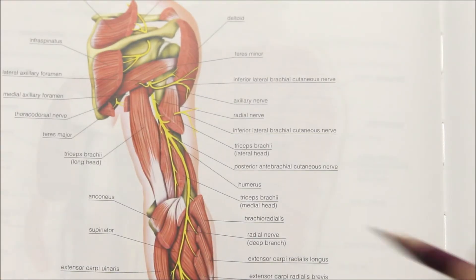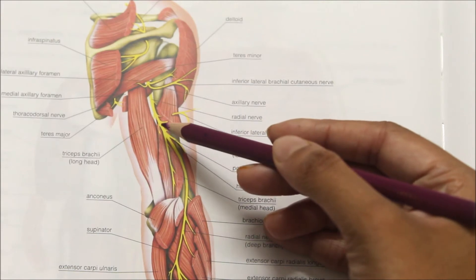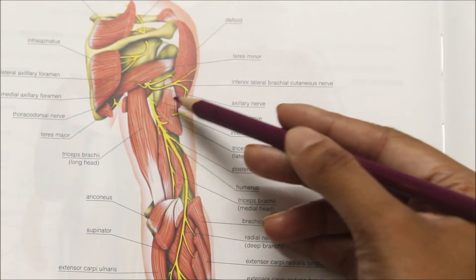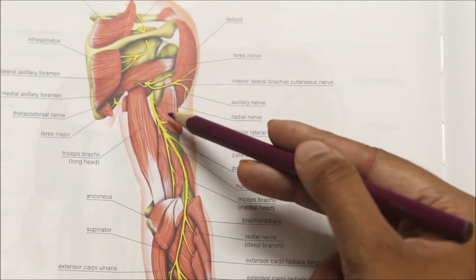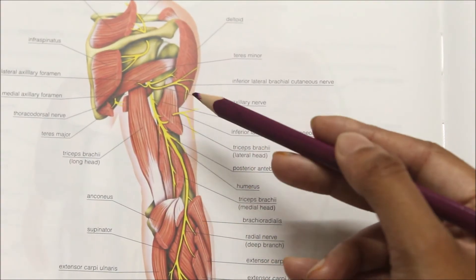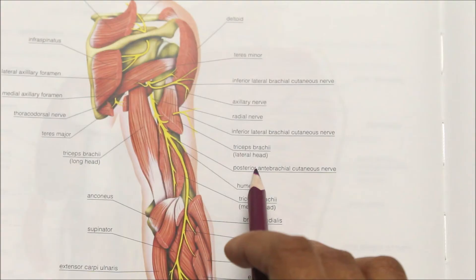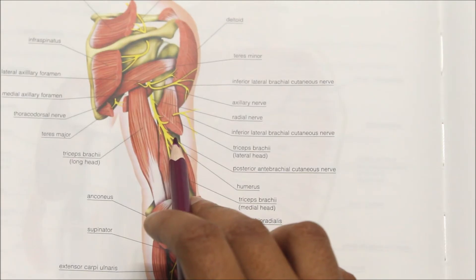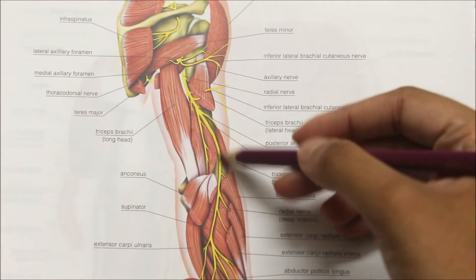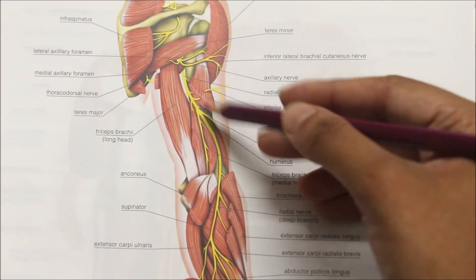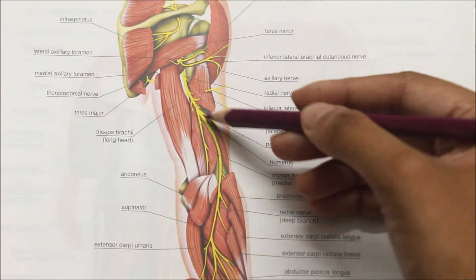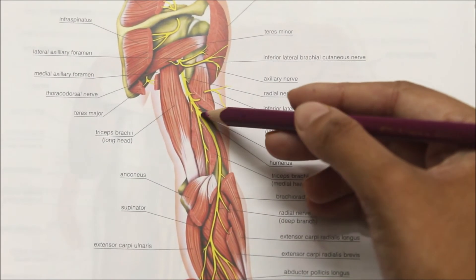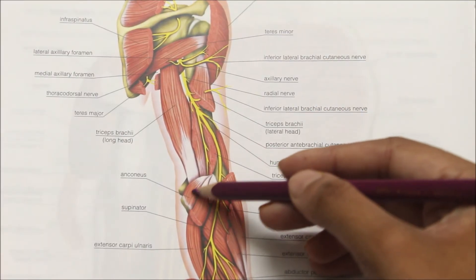Moving on to the branches of the radial nerve. In the axilla it gives muscular branches to the lateral and medial head of the triceps, and a cutaneous branch — the posterior cutaneous nerve of the arm, also called the posterior anti-brachial cutaneous nerve. In the spiral groove, the radial nerve again gives muscular branches to the lateral and medial head of the triceps, and a branch runs down to supply the anconeus muscle.